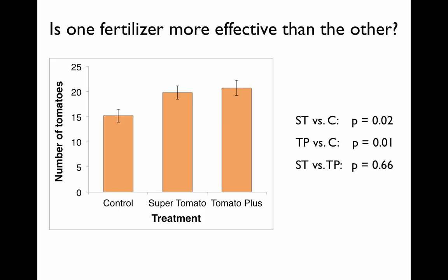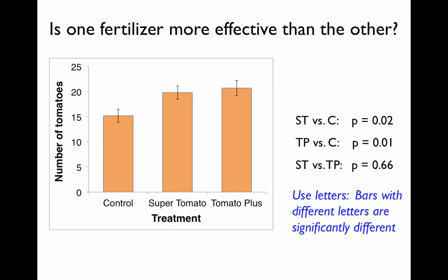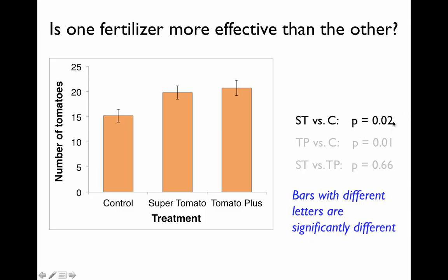In situations like this, it's more complicated to convey all of this information with stars on graphs. So scientists will instead label the bars with letters: any two bars with different letters are significantly different from one another, and any two bars labeled with the same letter are not significantly different. Since our control treatment was significantly different from the Super Tomato fertilizer — p is 0.02 for that comparison — we mark the bars with different letters. The convention is to start with A and move up the alphabet, so the control gets an A and the Super Tomato bar gets a B.